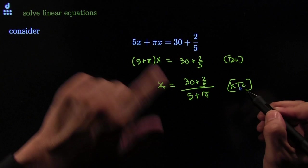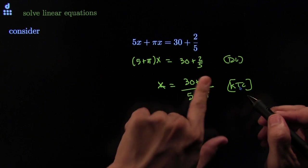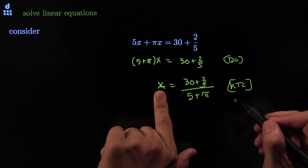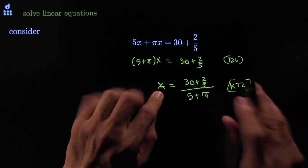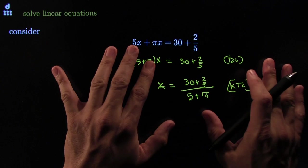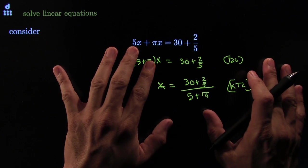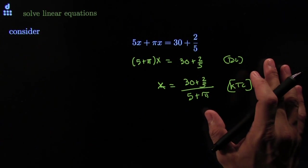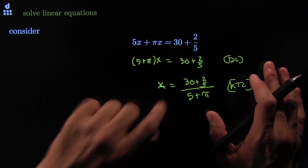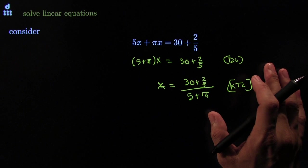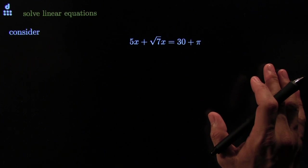How do we know if we're done? There are no x's on the right, and x is isolated on one side. Gather your x's and kill the coefficient — Steps 3 and 4.